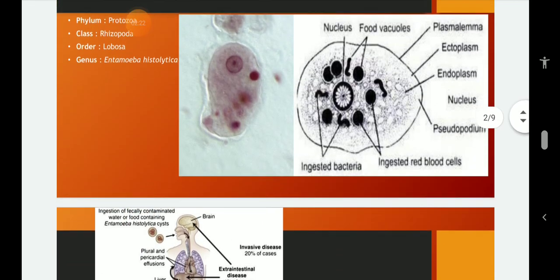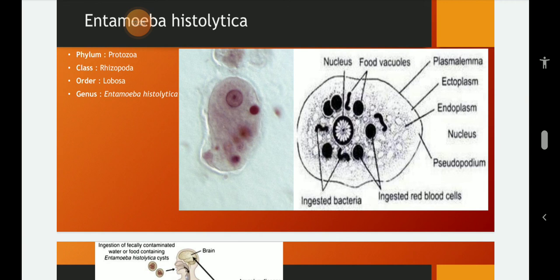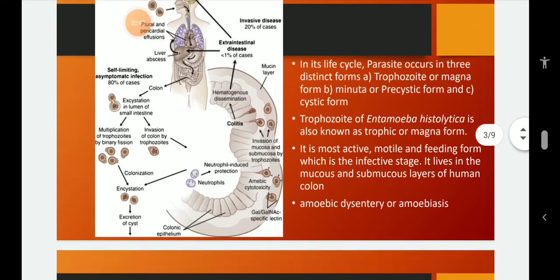Prominently, we should know about the structure of Entamoeba histolytica having outer ectoplasm and inner endoplasm, ingested RBCs in food vacuoles and vesicular nucleus which is very important to identify the specimen.